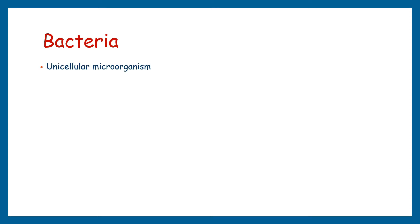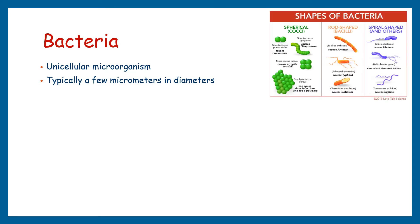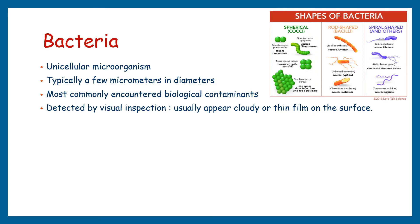Bacteria are a large and ubiquitous group of unicellular microorganisms. They are typically a few micrometers in diameter and can have a variety of shapes ranging from spheres to rods and spirals. Because of their ubiquity, size and fast growth rates, bacteria along with yeast and molds are the most commonly encountered biological contaminants in cell culture. Bacterial contamination can be detected easily by visual inspection of the culture. If your culture becomes turbid, hazy or cloudy within a few days, or if you observe a thin film on the surface of the culture, your culture is contaminated.